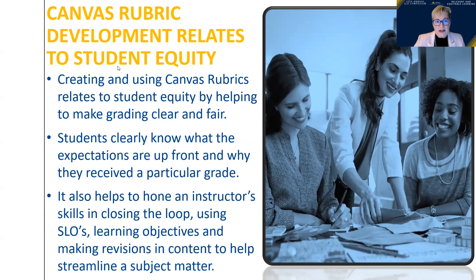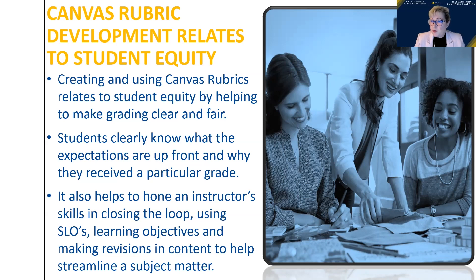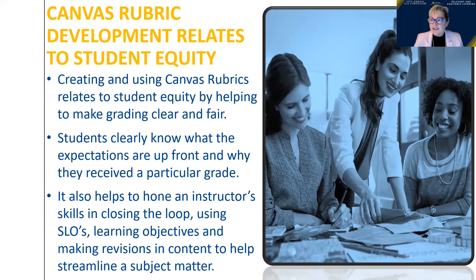Developing a Canvas rubric relates to student equity because when we're creating and using rubrics, we are being clear and fair. It's objective — we are stating exactly what we're looking for and whether they delivered in that area. Students clearly know what our expectations are up front. When I use rubrics for all my formative and summative assessments, I ask students specifically: look at the rubric — what do you need to do to excel? What do you need to include? What am I looking for? I train students to look at the rubric as they are writing a paper, or before they write it, and it helps them be more successful.